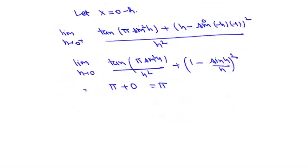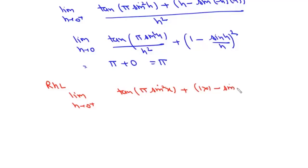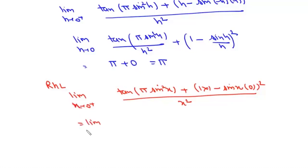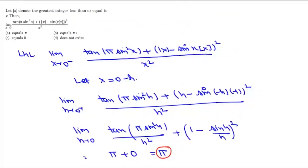For the right-hand limit, when x = 0 plus h, GIF(h) = 0. The expression gives: 10π sin²h/h² + 1, which evaluates to π + 1. Since the left-hand limit is π and the right-hand limit is π + 1, this limit does not exist. That is option D.